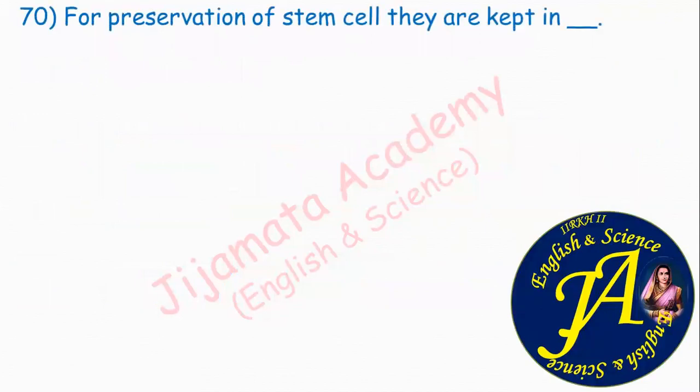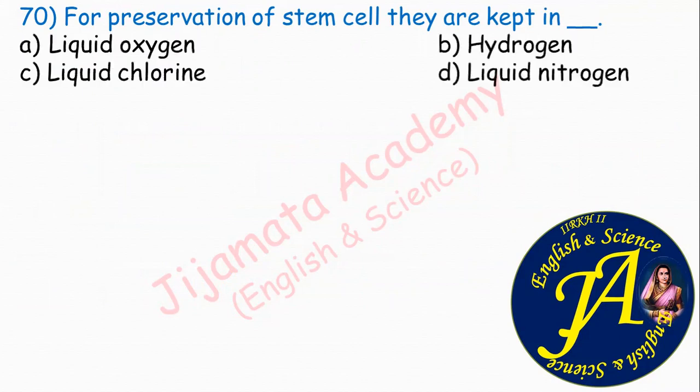For preservation of stem cells, they are kept in dash. Options are liquid oxygen, hydrogen, liquid chlorine, liquid nitrogen. Correct answer is option D: liquid nitrogen. Liquid nitrogen is at minus 196 degrees Celsius — this cryopreservation keeps the stem cells preserved.